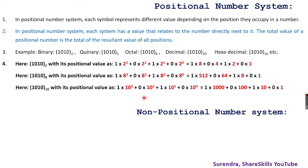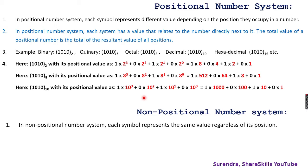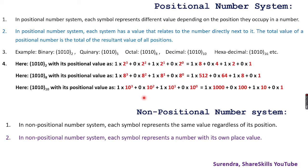In a non-positional number system, each symbol represents the same value regardless of its position — position does not affect the value at all. A good example is the Roman numeral system. In Roman numerals, one 'I' means one, two 'I's means two, three 'I's means three — there is no place value. That is the difference between positional and non-positional number systems.